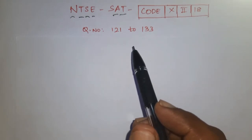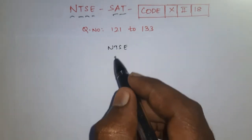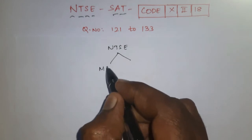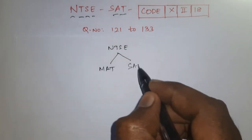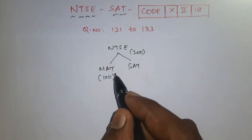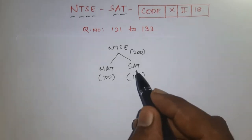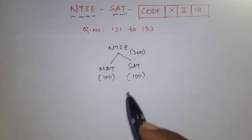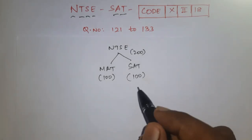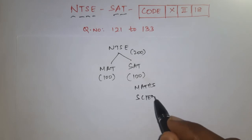Some information: the NTSC exam is conducted by the central government. It has two papers — one is MAT, another one is SAT. Total 200 marks: 100 marks for mental ability test, and remaining 100 marks for scholastic aptitude test. This scholastic aptitude test depends on subject — that is, Maths, Science, and Social Science.